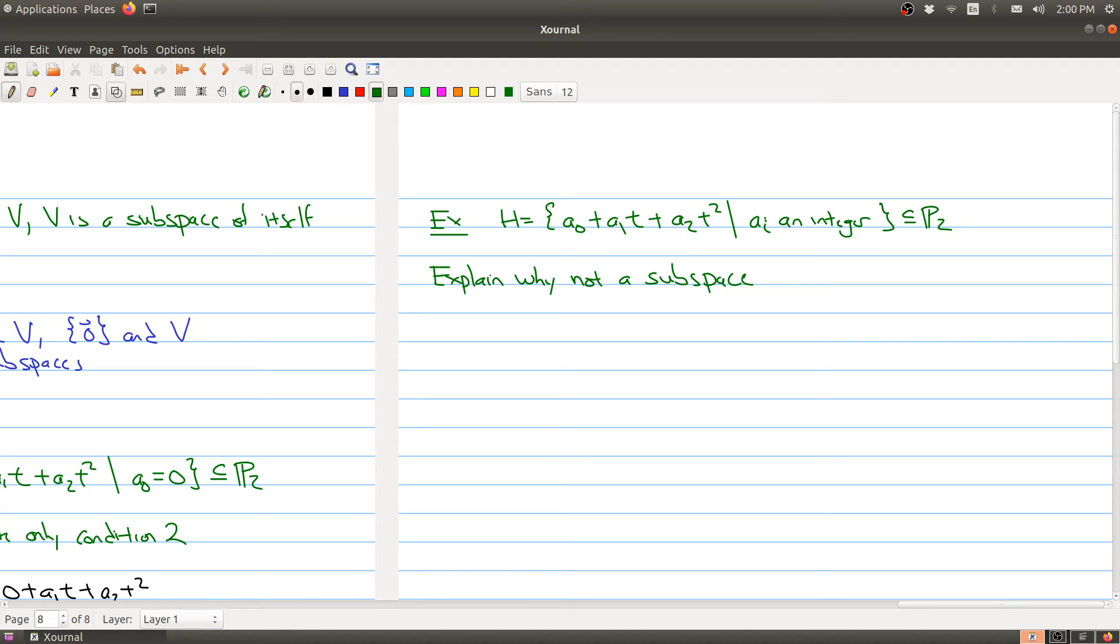Okay, so we're not allowing fractions or transcendental numbers. So these numbers can only be 1, 2 or negative 1, negative 2. We're not allowing 3.5 for example. So what we want to do is explain why this is not a subspace.